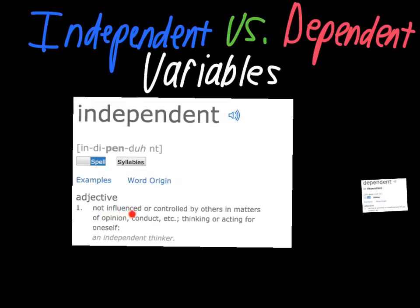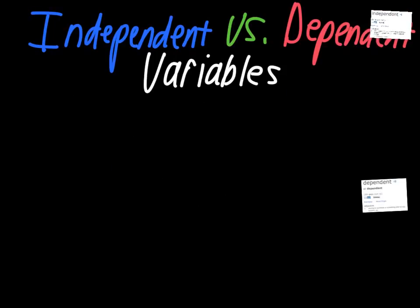So that's our key word — not influenced by others. It also talks about thinking or acting for oneself, like if a person is independent. But we're going to be talking more about the ideas of setting up variables in an experiment and whether the variables are influenced or controlled by other factors in the experiment. That's the important point for us.